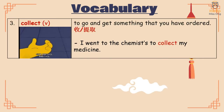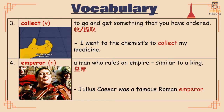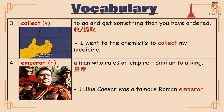Collect: to go and get something that you have ordered. Example: "I went to the chemist's to collect my medicine." Emperor: a man who rules an empire, similar to a king. Example: "Julius Caesar was a famous Roman emperor."